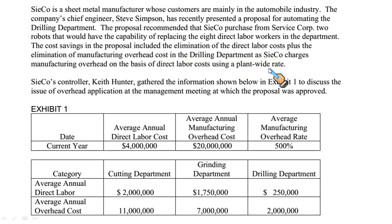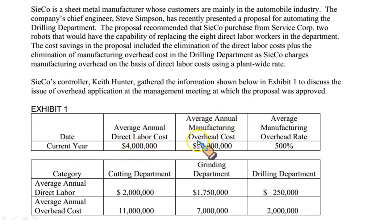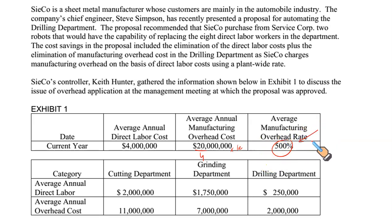The current application rate — also called the overhead application rate, recovery rate, or absorption rate — is based upon labor cost. Our average annual direct labor cost is $4 million, and our average annual manufacturing overhead cost is $20 million. So overhead cost as a percentage of labor cost: 20 million divided by 4 million times 100 equals 500%. This 500% is your application rate.